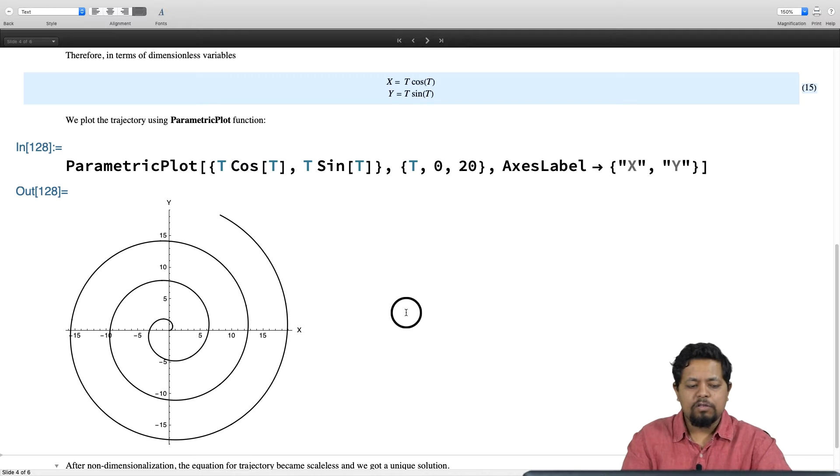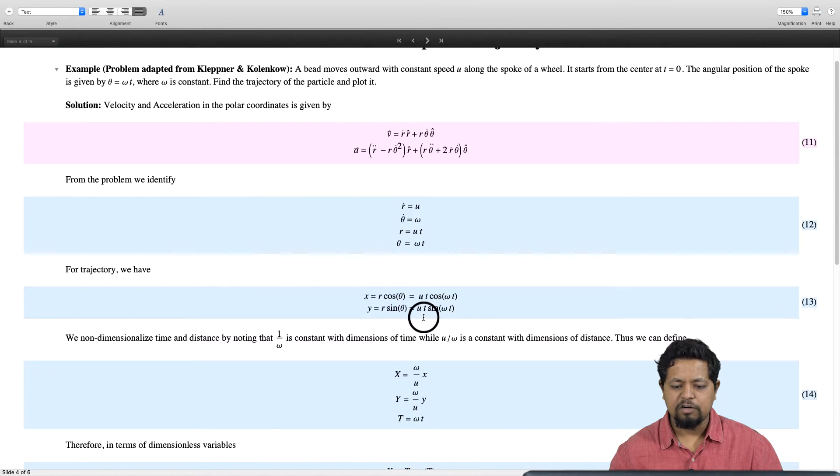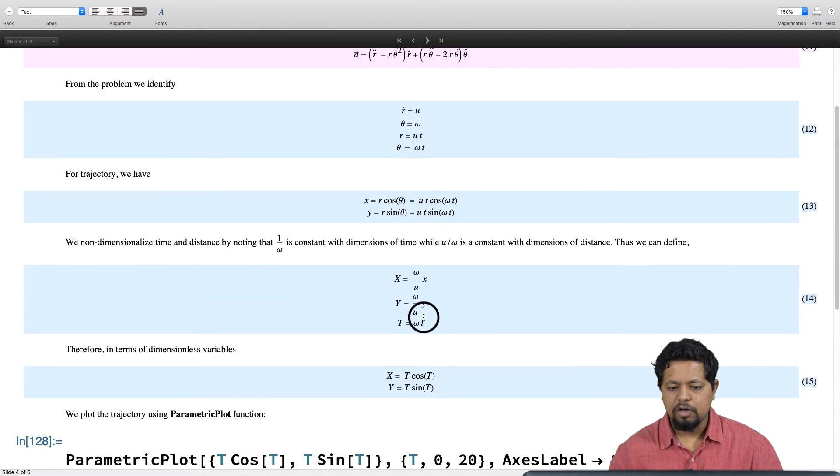Alternatively, we could have also used a polar plot function by using the r and theta coordinates. For polar plot function, we need to know the equation in terms of polar coordinates.